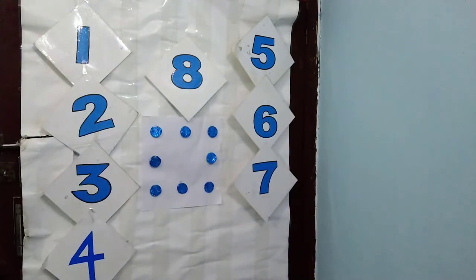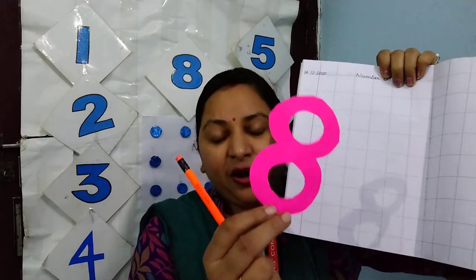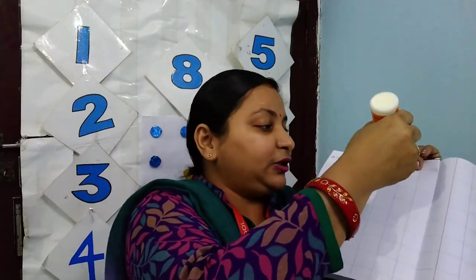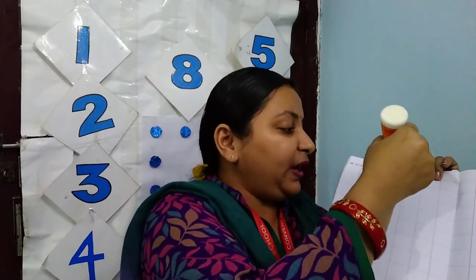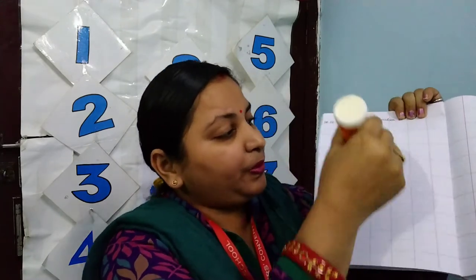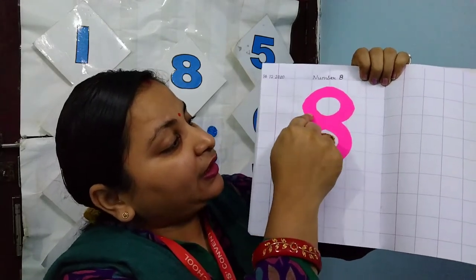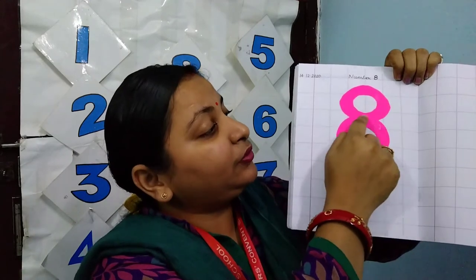In our maths copy today, aaj hum log kya karenge? Maths ki copy mein hum log number eight ka cut out stick karenge. Cut out stick karne ke liye apne apne parents ki help se number eight ka cut out banayenge, aur uske baad thoda sa glue apply karenge, aur uske upar se hum log number eight stick karenge. Number eight stick karne ke baad hum log apni finger se trace karenge — one circle, two circle, number eight.